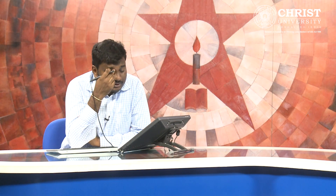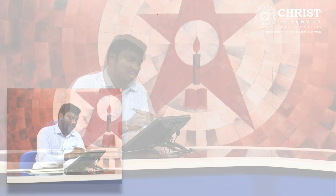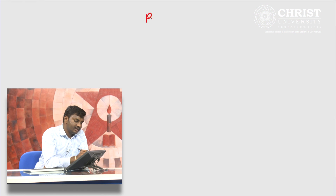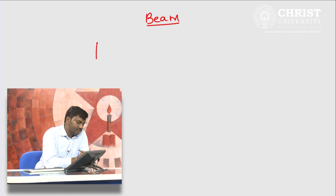This is a very simple method of how to find out the degree of static indeterminacy of a rigid jointed frame. Now let us consider the example of a beam. Let me consider a propped cantilever. This is a propped cantilever.